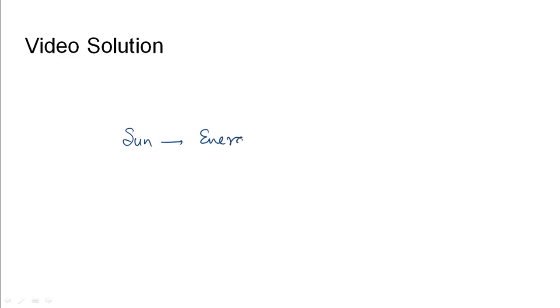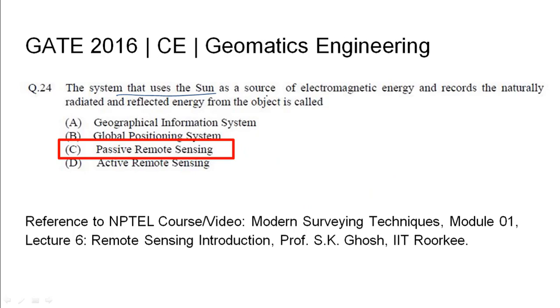As we saw in the previous slide, when we have the sun that sends out beams towards Earth and they are recorded using a satellite, it is called the passive remote sensing method. Because the satellite is not sending any energy or beams of its own, it is just using the sun's energy to detect. So the system that uses the sun as a source of electromagnetic energy and records the naturally radiated and reflected energy is called passive remote sensing, that is option C.